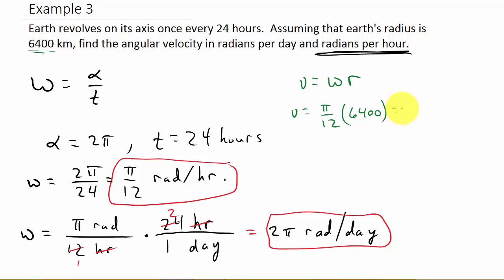Let's see, what would that be? That would be 1675.5. So that would be 1675.5 kilometers. And the time we used this angular velocity that was in radians per hour, so that would be kilometers per hour.